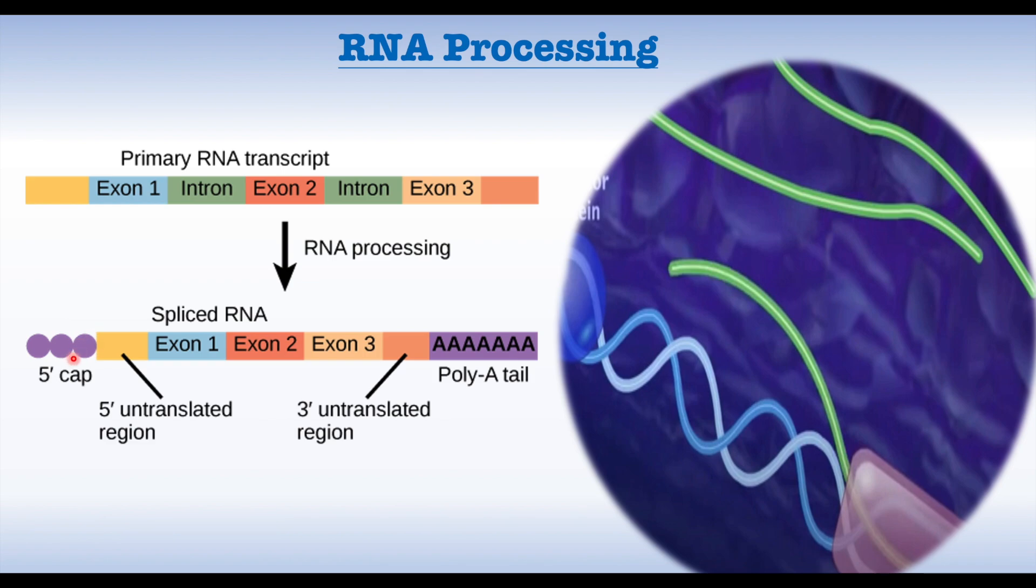The second one, polyadenylation: a string of adenine nucleotides, poly-A tail, is added to the three prime end. This tail stabilizes the RNA and aids in nuclear export and translation. The third one is splicing. Introns, as we can see here, the non-coding regions, are removed, and exons, the coding regions, are joined together as it's clear in this animation.